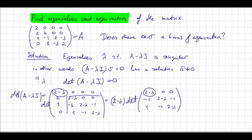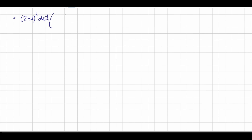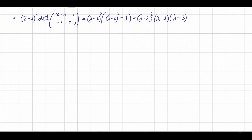Repeating the same argument of the first row expansion — this is the only non-zero entry in the first row — so this determinant equals (2 minus lambda) times the determinant of the 2 by 2 matrix. Together this gives (2 minus lambda) squared times the determinant of [[2 minus lambda, minus 1], [minus 1, 2 minus lambda]], which equals (2 minus lambda) squared times ((lambda minus 2) squared minus 1). This is a difference of two squares: lambda minus 2 plus 1 times lambda minus 2 minus 1.